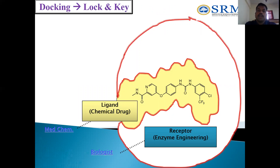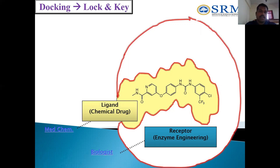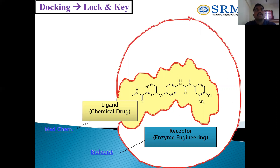Docking basically works based on the concept of the lock-and-key method, where the enzyme acts as a lock and small molecules act as a key. Only particular enzymes are activated with a particular key or small molecule — what we call substrate. By seeing this docking model, we can help both molecular biologists as well as medicinal chemists in how to design small molecules.